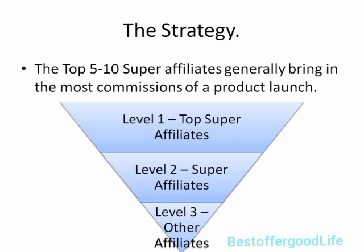Did you know that the top five to ten super affiliates generally bring in the most commissions of your product launch? As you can see in the pyramid — or upside-down pyramid — level one is the top super affiliates and level two are the super affiliates. The reason I split these into two sections is because top super affiliates are generally the people who have the list, know how to drive traffic, and land in the top ten or top twenty on a contest. These types of super affiliates can generate a lot of commissions, and you can build relationships with them and do a lot of work for them so they can simply jump on board.